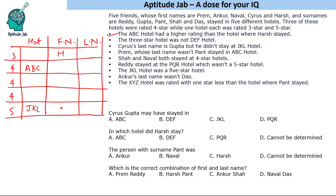Cyrus Gupta did not stay in the three-star hotel either, so Cyrus is staying in a four-star hotel. Which specific hotel we do not know yet. Frame, whose last name was not Punth, stayed in the ABC hotel. So Frame stayed in the ABC hotel, while Cyrus Gupta is in some four-star hotel — the name of which is still unknown.